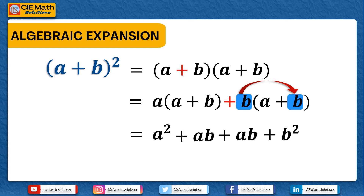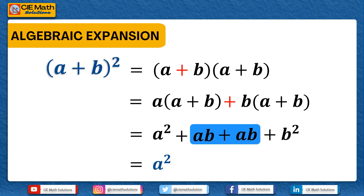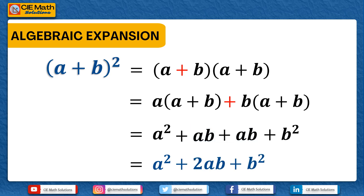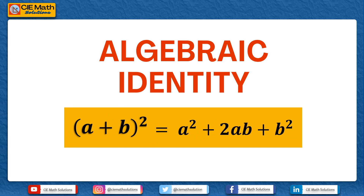We can now simplify this expression by adding like terms. So we have a squared, and we could add ab and ab since they are like terms, giving us 2ab, plus the last term which is b squared. We have just shown the algebraic expansion of the identity: quantity a plus b squared is equal to a squared plus 2ab plus b squared.